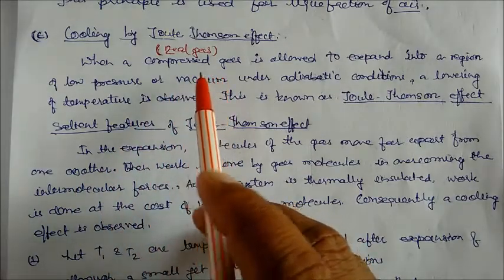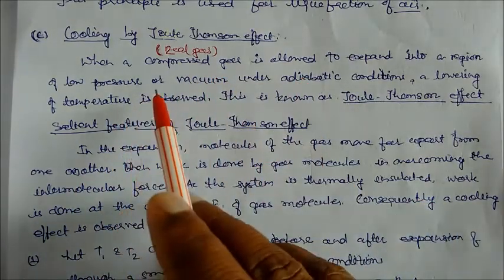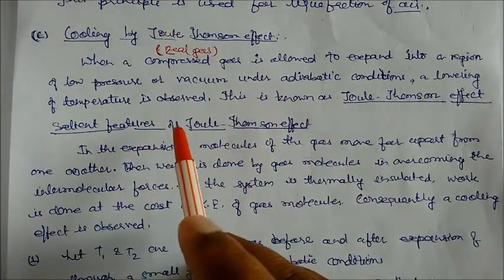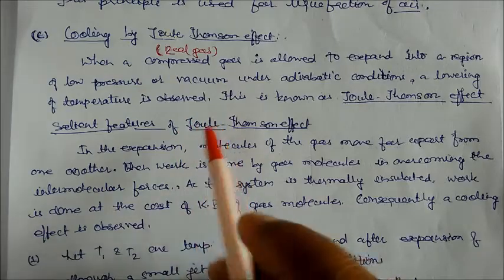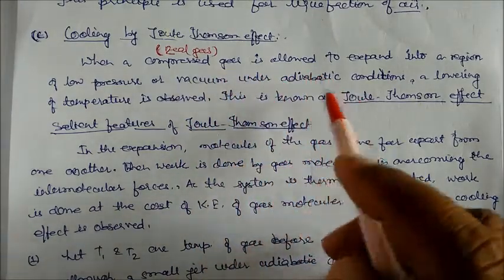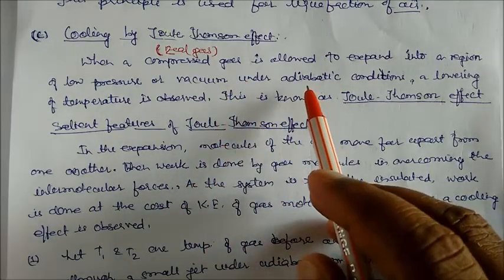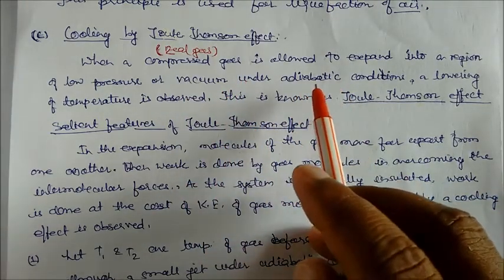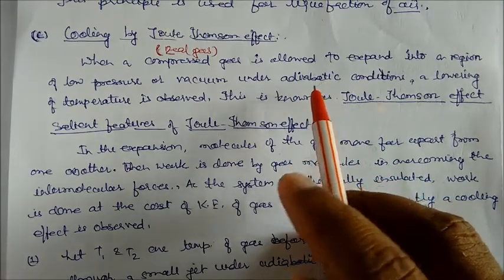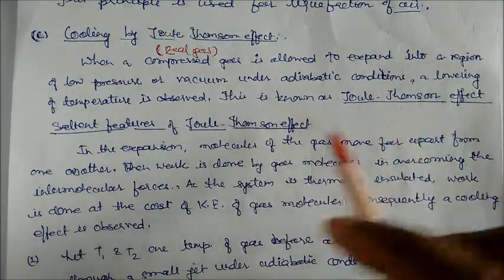When compressed air, a real gas, is allowed to expand into a region of low pressure or vacuum under adiabatic conditions, a lowering of temperature is observed. When a compressed gas passes from higher pressure to low pressure or vacuum, the conditions should be adiabatic, meaning there will be no addition of heat into the system. The temperature becomes lower, and this is called the Joule-Thompson effect.